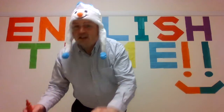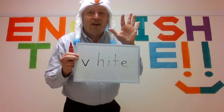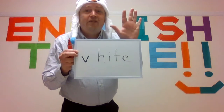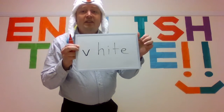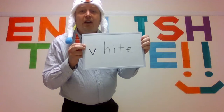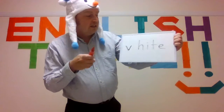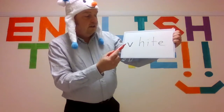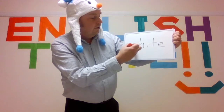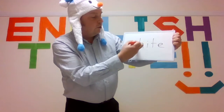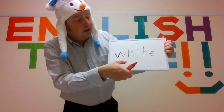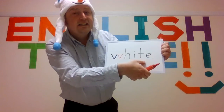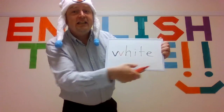The next one — white. Five seconds: five, four, three, two, one. Did you find the wrong letter? The wrong letter is V. You should have W — like two Vs. Let's spell together: W, H, I, T, E — white. Very good.